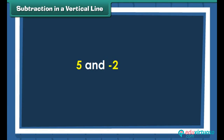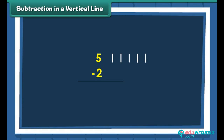Let us find five minus two. Draw five lines next to five. Cross out two lines to subtract two. Count the remaining vertical lines: one, two, three. Therefore, five minus two is three.